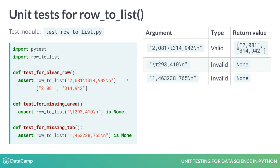It contains three unit tests for the RowToList function. The unit tests check if RowToList returns the correct return values for clean rows, rows missing area data, and rows missing the tab separator, respectively.